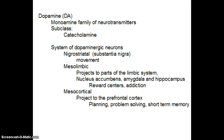The first is the nigrostriatal system, which includes the substantia nigra and is important for movement. The mesolimbic system projects to parts of the limbic system, which includes the nucleus accumbens, the amygdala, and the hippocampus — these include the reward centers. The nucleus accumbens is what lights up when we have sex, eat chocolate, or do drugs. It's a site of reinforcement important for learning, but it can also be a site for drug action in terms of addiction and substances of abuse.